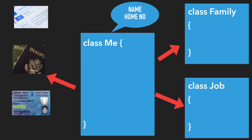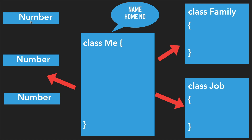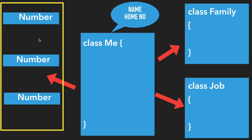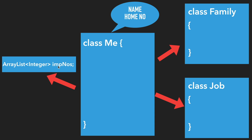These other items — driving license, passport, PAN card — are all numbers. To represent a group of numbers or entities in Java, I need to use a collection. So let me use an ArrayList to store all my important numbers. I'll make it a generic type of Integer, since all the numbers I'm storing will be of integer type.